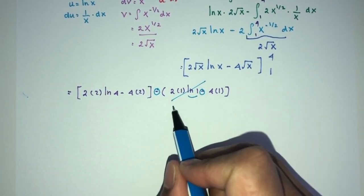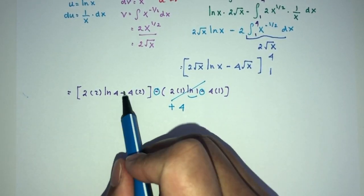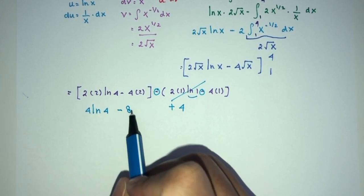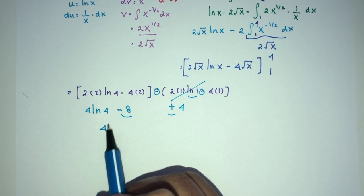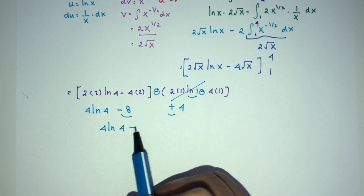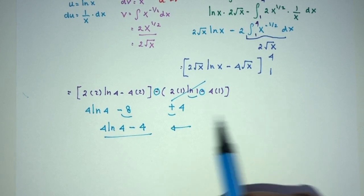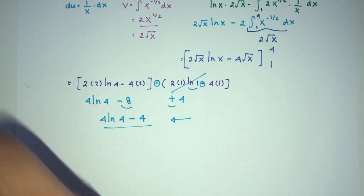Minus minus become plus, plus 4. Here we have 4, ln of 4 minus 8 plus 4. You have 4 ln of 4 minus 4 as your answer for question number 3. This is the exact value of this integral.